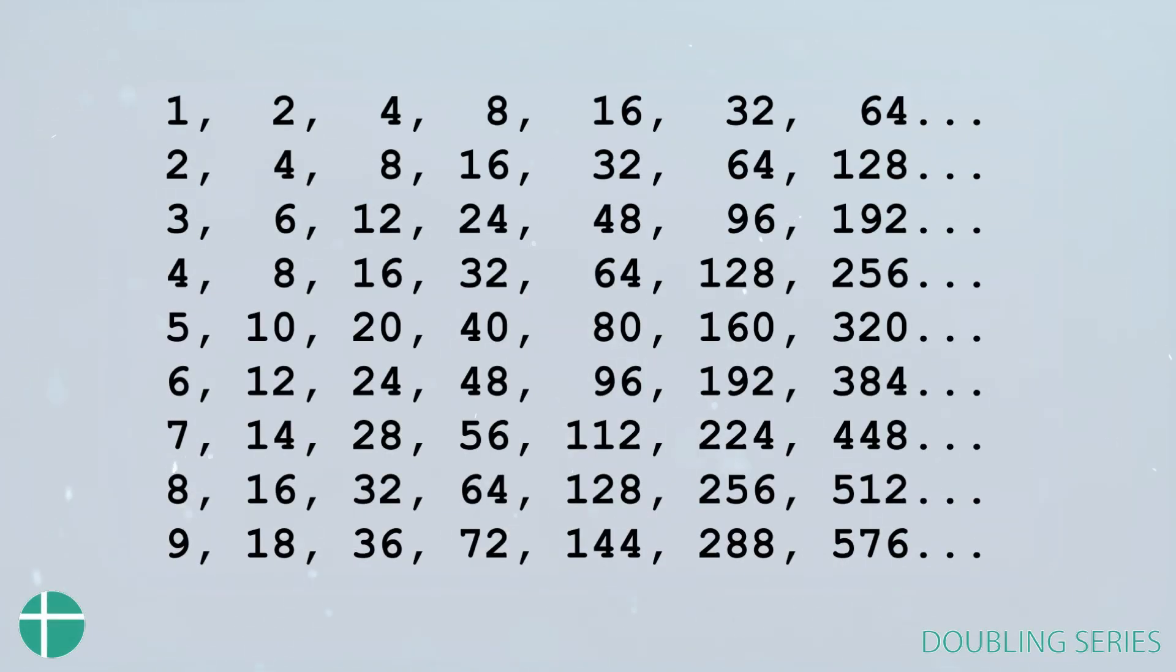Then simply double them across the page. Starting with one, you double them. 1, 2, 4, 8, 16, 32, 64, and so on. We don't have to go too far, just six, seven, eight digits, just to see this proof. And then you do the same thing for two, double it: 4, 8, 16, 32, 64, 128, etc. So once you're done with all nine digits, you'll have something that looks like this.